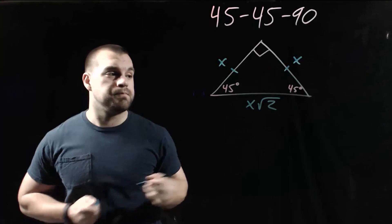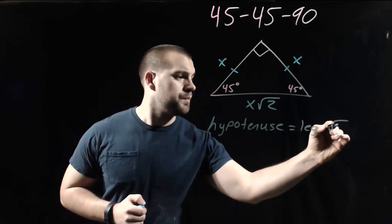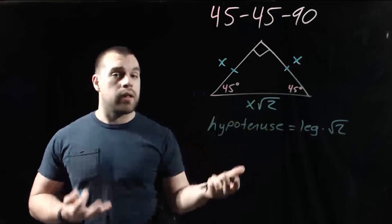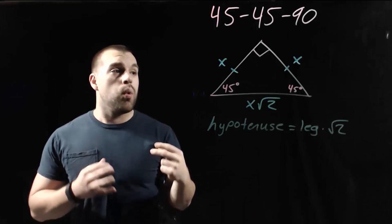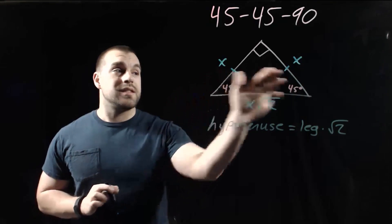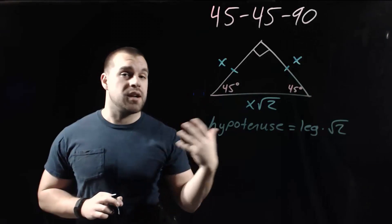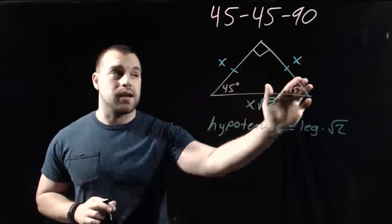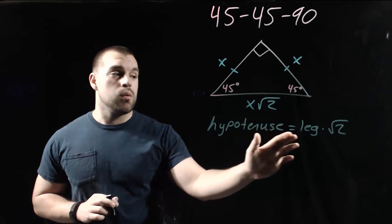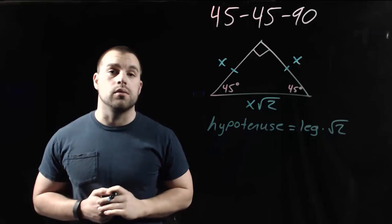So what that means: if we know the length of one of the legs of our triangle, we're able to figure out the lengths of all the other sides. Since this is an isosceles triangle, these x values end up being exactly the same — this leg is the same exact length as this leg. And then if we want to find the hypotenuse, we take the length of the leg times the square root of 2.